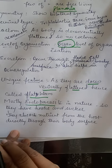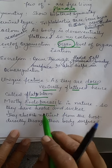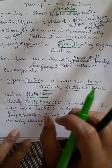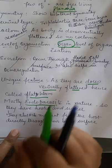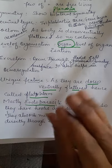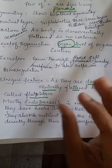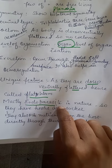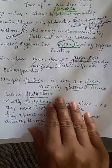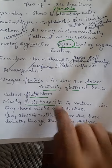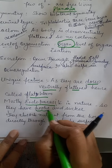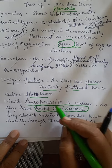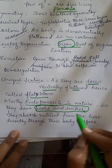Most of the flatworms are endoparasites in nature. Endoparasites means they live inside the body of the host. Since the intestine shows peristalsis — rhythmic contraction and relaxation — food moves along, and these parasites could be expelled. To prevent themselves from being expelled, they have hooks and suckers. These hooks and suckers are the unique feature of Platyhelminthes.